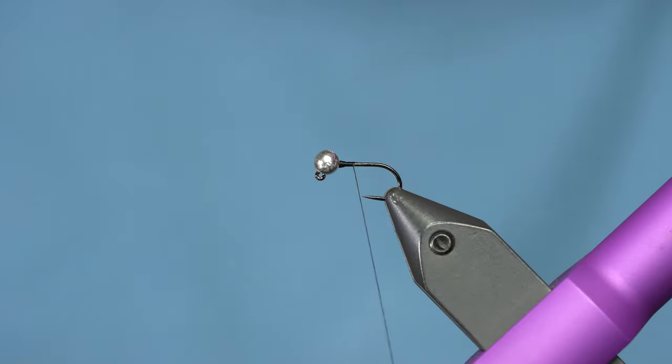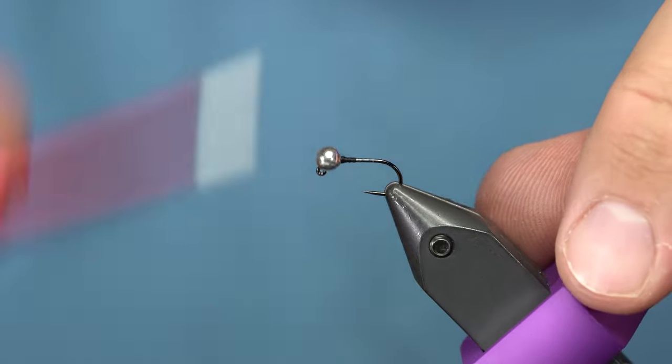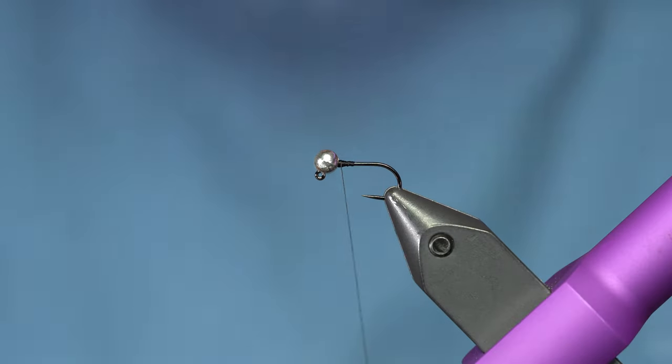Okay, so this is just a size 14 with a 3.5 bead on it. Now, anytime we put a bead on a hook, that doesn't mean that's how it's supposed to be tied. You can put whatever bead you want on it to match the depth situation you have going on.